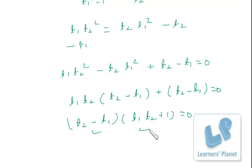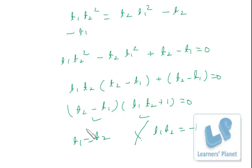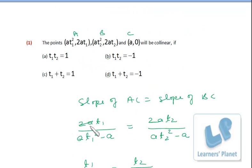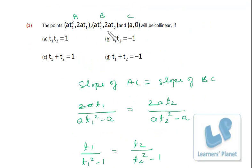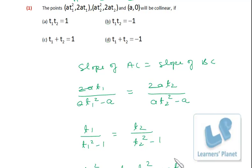So either t2 − t1 = 0 or t1·t2 + 1 = 0, meaning t1 = t2 or t1·t2 = −1. But t1 cannot equal t2 because then both points would be the same point. Therefore the condition for the three points to be collinear is t1·t2 = −1.